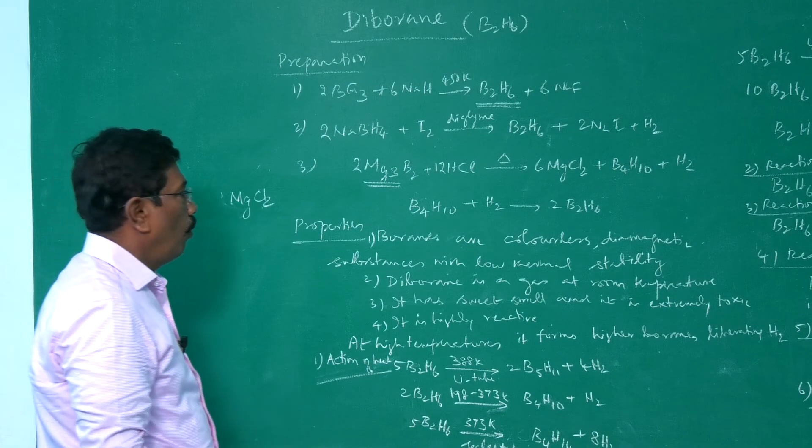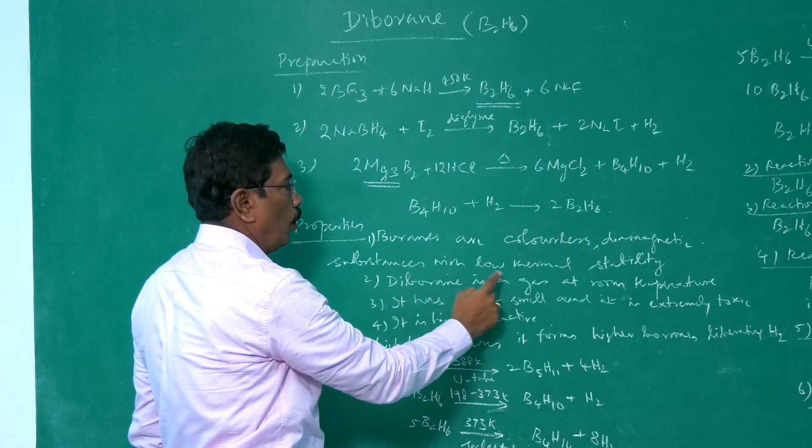Now properties. Boranes are colorless, diamagnetic substances with low thermal stability. When I say low thermal stability, it is more reactive. Therefore variety of compounds we are getting from Diborane. It is highly reactive, low thermal stability. Diborane is a gas at room temperature. It has sweet smell and it is extremely toxic, that is poisonous in nature. As I said earlier, it is reactive because of low thermal stability.